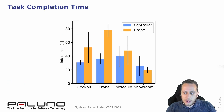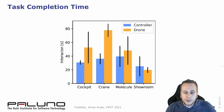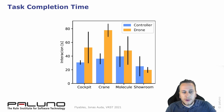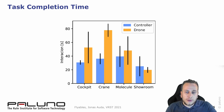We measured the task completion time for each scene and each input. Almost always, controllers were faster than Flyables. The only exception was the car showroom, where participants were faster when using Flyables. Overall, we found that Flyables were slower than VR controllers.